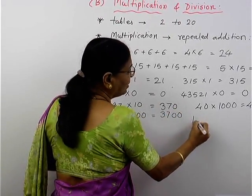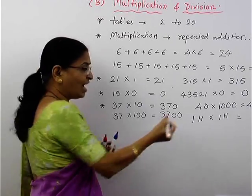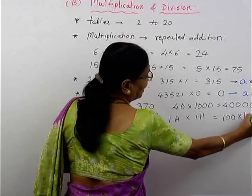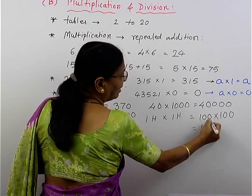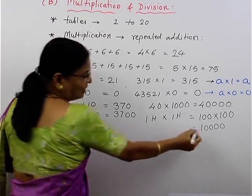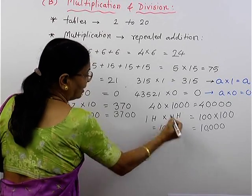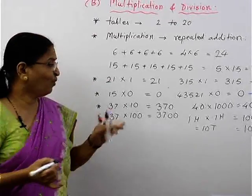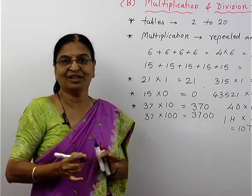Suppose the question is 100 into 100. How will you write it? 100 is 1 with 2 zeros, multiplied by another 1 with 2 zeros. So on 100, add 2 more zeros, and the answer will be 10,000. You can write it as 10,000, or as 100 hundreds — 100 into 100 gives you 10,000.